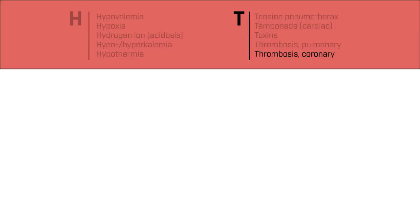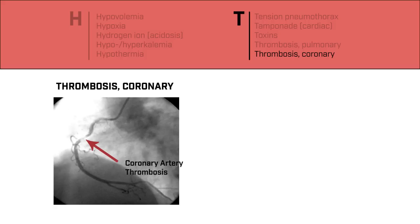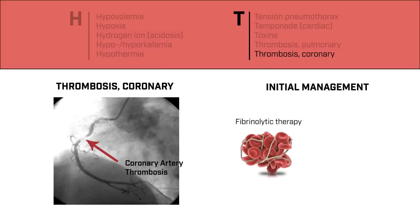Coronary thrombosis is a blockage within the coronary arteries, leading to a myocardial infarction or ischemia. The occlusion of the coronary artery prevents blood flow to the heart, and as a result, the heart muscle dies. Cardiac arrest can occur depending on the location and extent of the blockage and ischemia. History is important if it can be obtained, most likely from a friend or family, because the patient may have complained of severe substernal chest pain before losing consciousness. If an EKG can be obtained, ST elevations may be present. In the acute setting, fibrinolytic therapy can be considered, but the definitive treatment includes angioplasty and stent placement, or CABG.